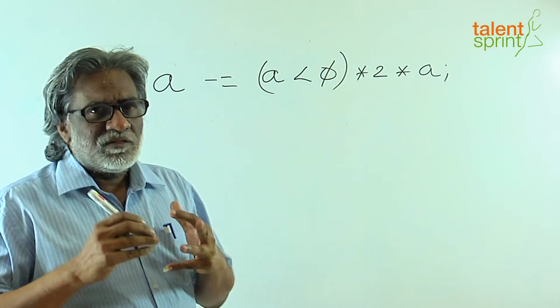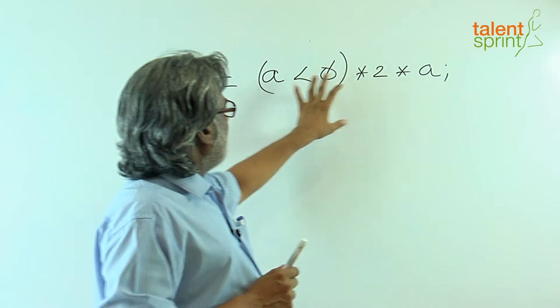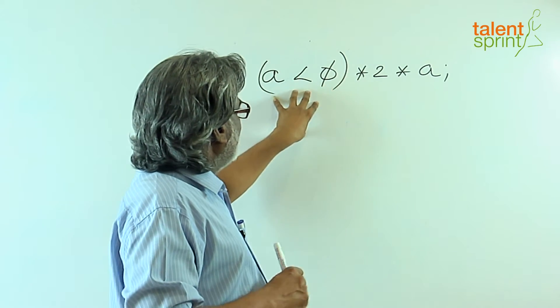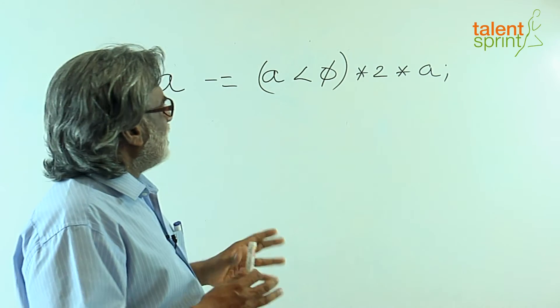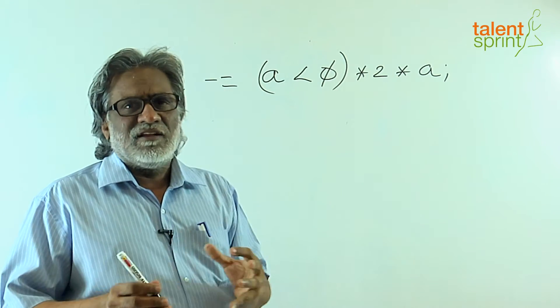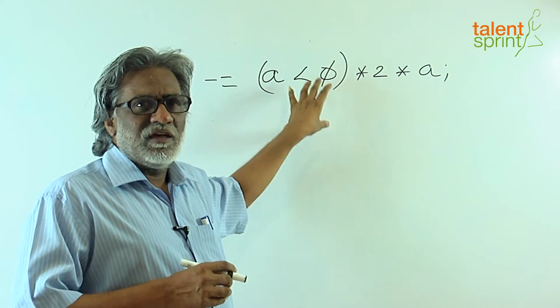How do you even think about breaking it down into pieces? There are three parts to the right hand side: a less than 0 multiplied by 2 multiplied by a. Multiplied by 2 and multiplied by a are fairly straightforward, so we need to consider what is the meaning of a less than 0.